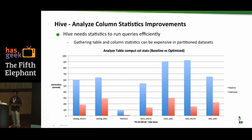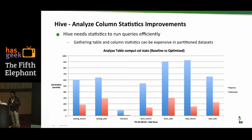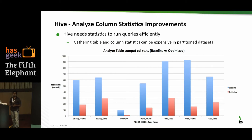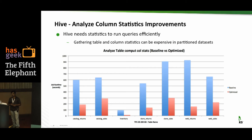For Hive queries to execute efficiently, accurate table and column-level statistics are critical. Table statistics can be gathered automatically by setting hive.stats.autogather=true. Column statistics require an explicit ANALYZE TABLE COMPUTE STATISTICS FOR COLUMNS command whenever the dataset is updated. This was expensive due to the number of Metastore calls, but recent fixes achieved around a 3x improvement. These optimizations matter especially when spinning up a transient cluster: you want to ingest data, expose it to users, and complete queries as fast as possible to maximize cluster utilization.